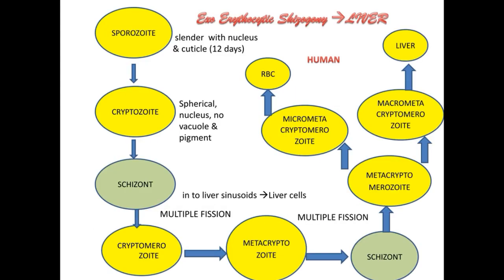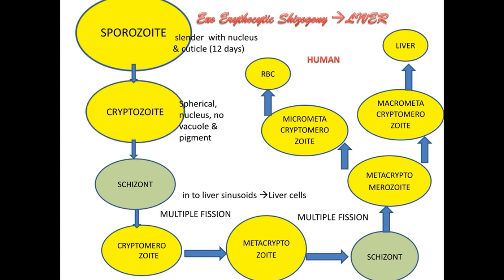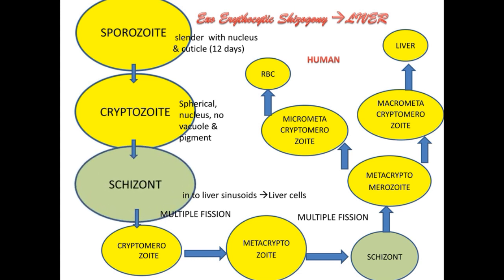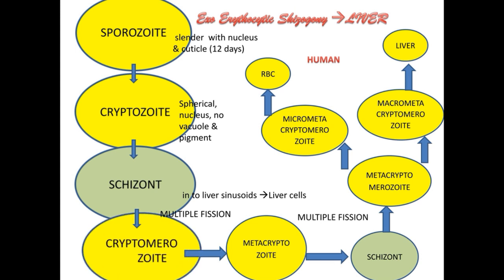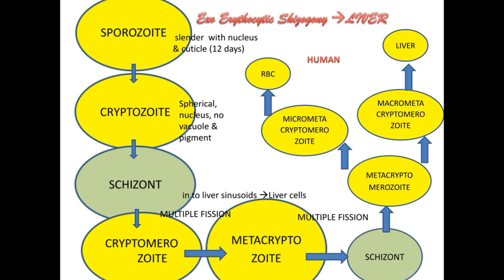The first stage is exoerythrocytic schizogony, which occurs outside the RBC inside the liver cells. The sporozoite enters the liver cells, then changes into the next stage — the cryptozoite, which is spherical. The cryptozoite undergoes multiple fission to form cryptomerozoites, which enter the liver sinusoids and infect other fresh liver cells. Cryptomerozoites change into metacryptozoites, then into schizonts, which undergo multiple fission to form metacryptomerozoites.